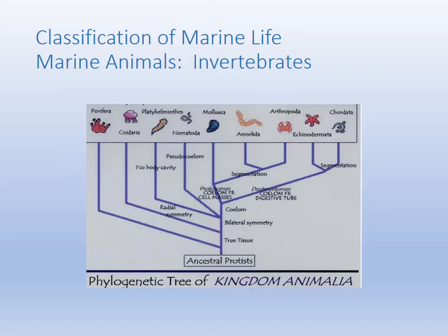Welcome to the second in the classification of marine life. We're going to enter Kingdom Animalia and take a look at the invertebrate phyla of animals. Looking at the tree on this page, you can see that scientists postulate that protists are the ancestors of the animal.